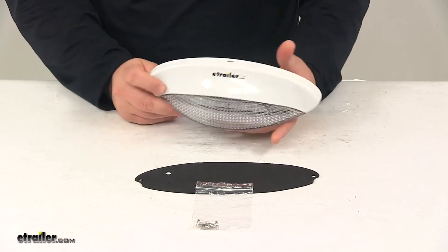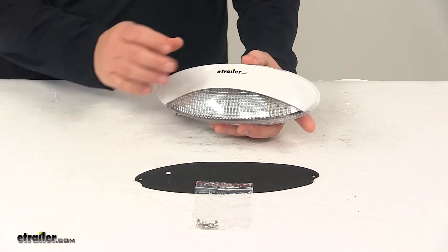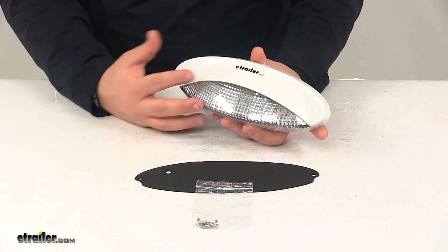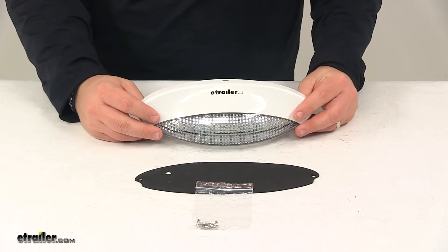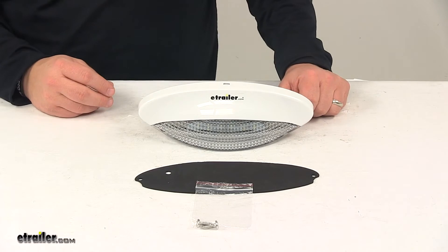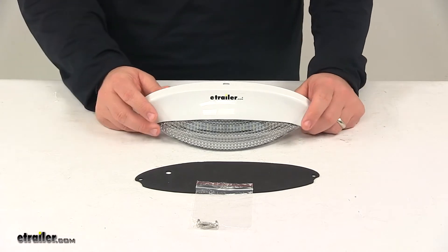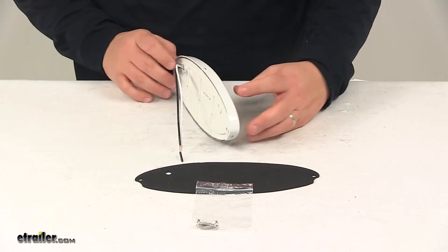It features a weatherproof design which keeps it safe from the elements. The housing is white in color, the lens is clear. It's an LED system. LEDs are great replacements for incandescent lights. They last longer, they burn brighter and they're much more efficient. You don't have to worry about replacing bulbs or worry about brittle filaments.